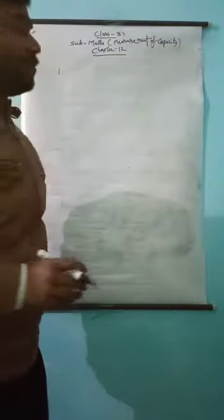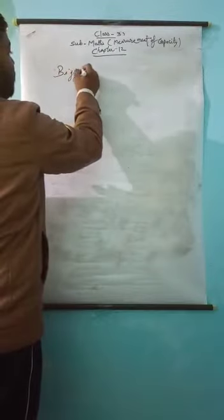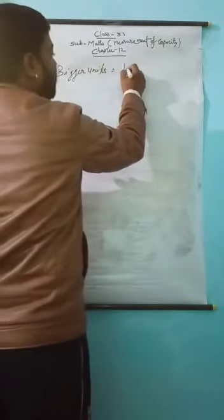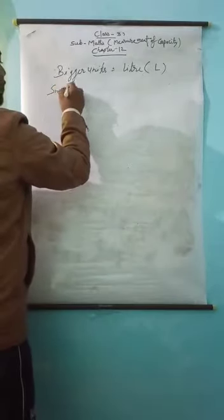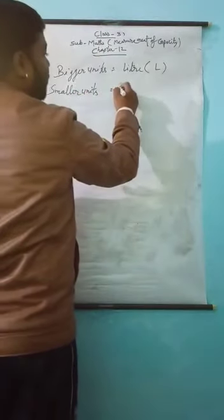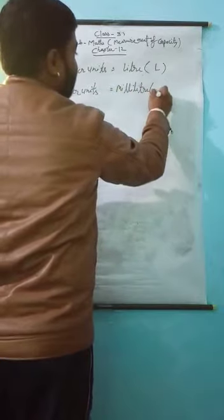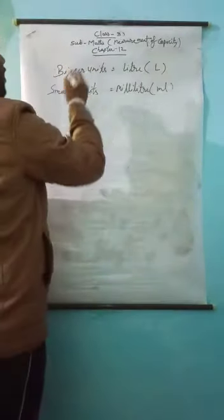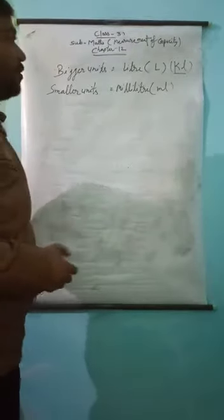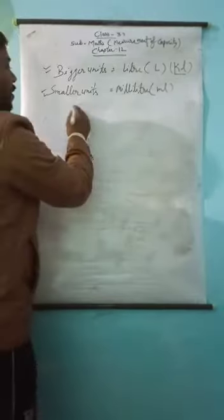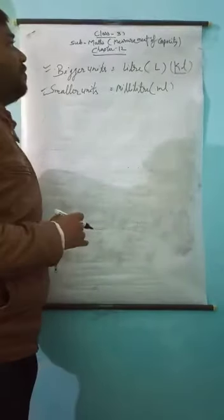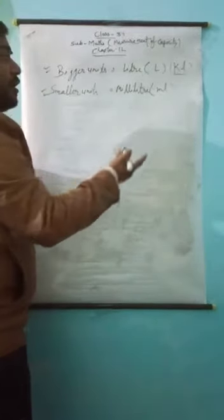I will give you some formulas. There are two types of units. First, for bigger units: liter — short form L — and kilo liter. For smaller units: milliliter. This is your formula, like in the previous class we found out kilogram and gram. In this chapter we will learn kilo liter, liter, and milliliter.